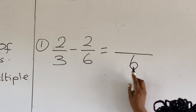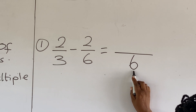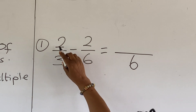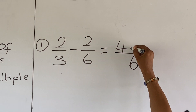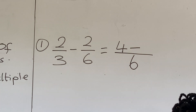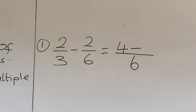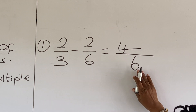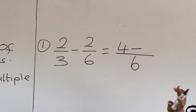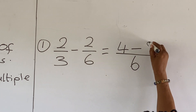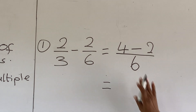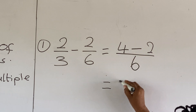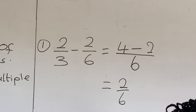Because six is a multiple of three, our LCM is six. Three will go into six two times. Two times two is four. And because we are subtracting, we bring our subtraction symbol. Six will go into six one time. One times two is two. So we can now subtract our new numerators: four minus two is two over six. And this is our answer.